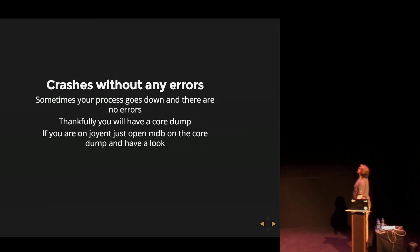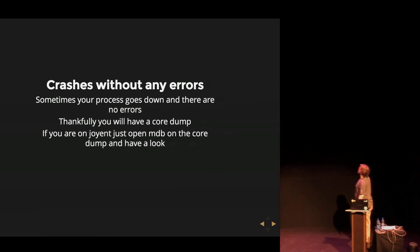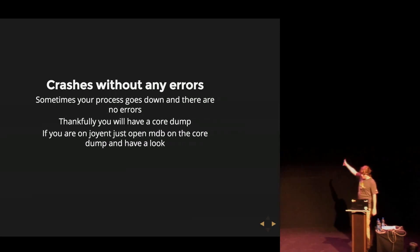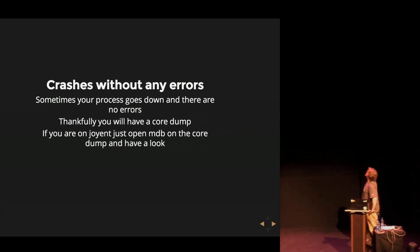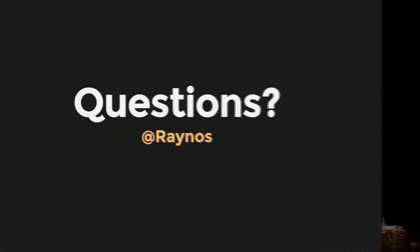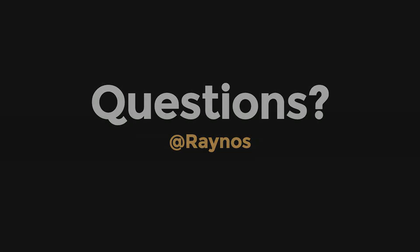To round up: some problems don't have any errors, and some errors will stay hidden from you permanently — you just can't handle them, you can't catch them, you can't log them. The server's just going to crash and there's going to be a core dump. The best thing you can do is hopefully you're running on SmartOS, open up MDB on the core dump, and have a look. That's pretty much it. Thank you.